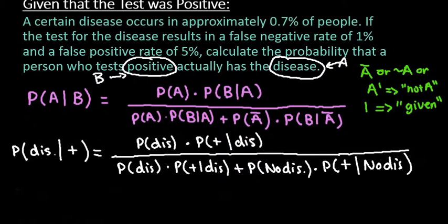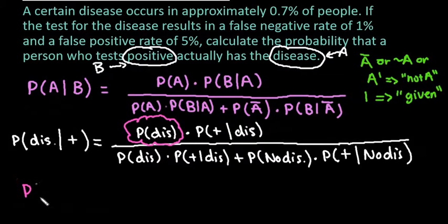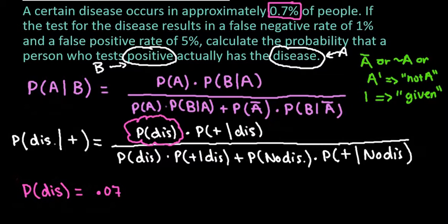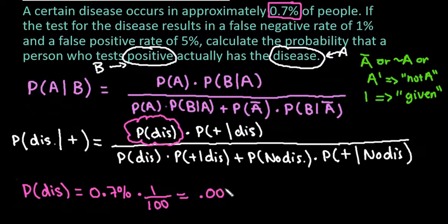Let's go through all the different values based on what's in the problem. The first thing is the probability of actually having the disease. The problem states a certain disease occurs in approximately 0.7%. We convert that percent to a decimal by dividing by 100, giving us 0.007. That's what we'll plug in wherever we have the probability of the disease.